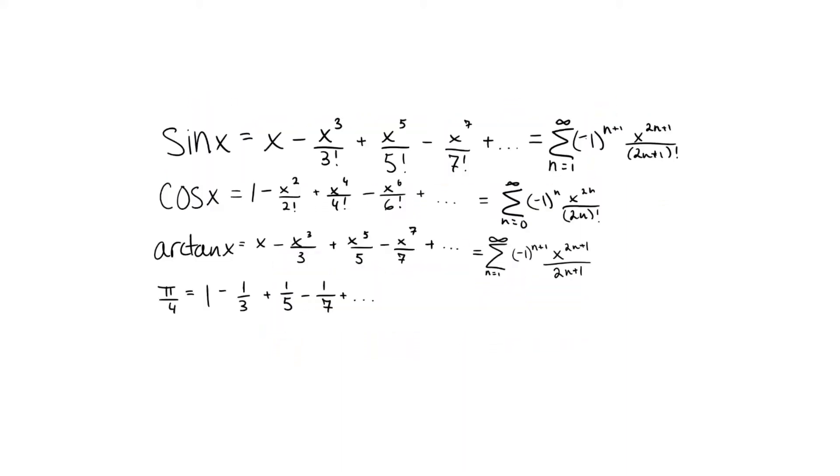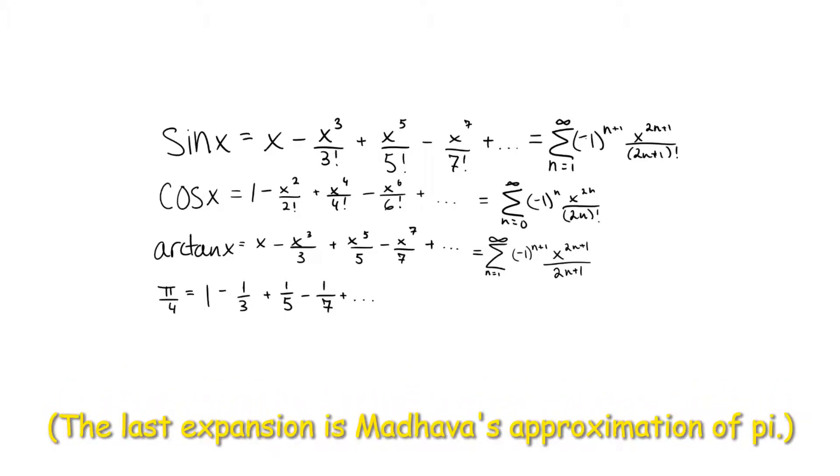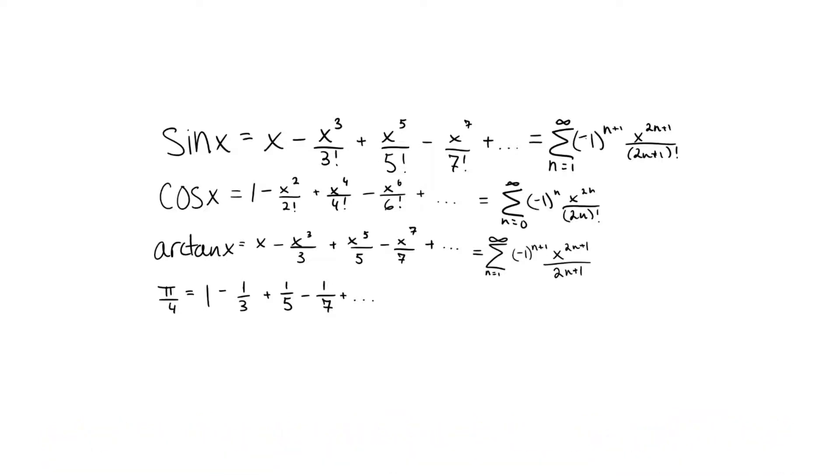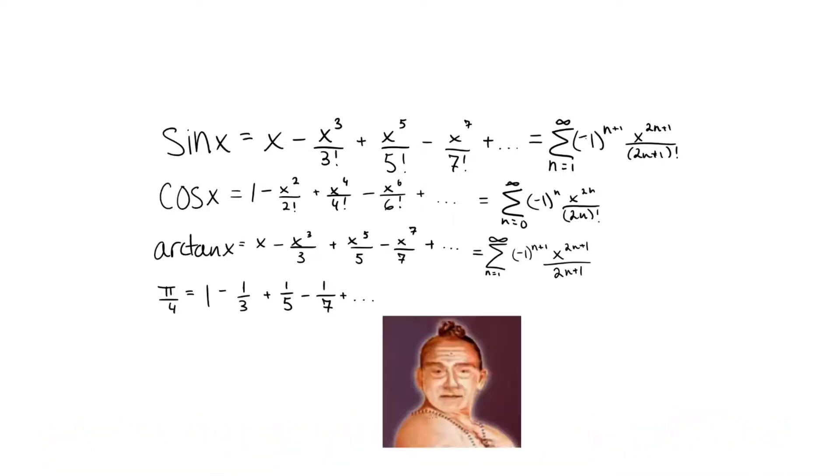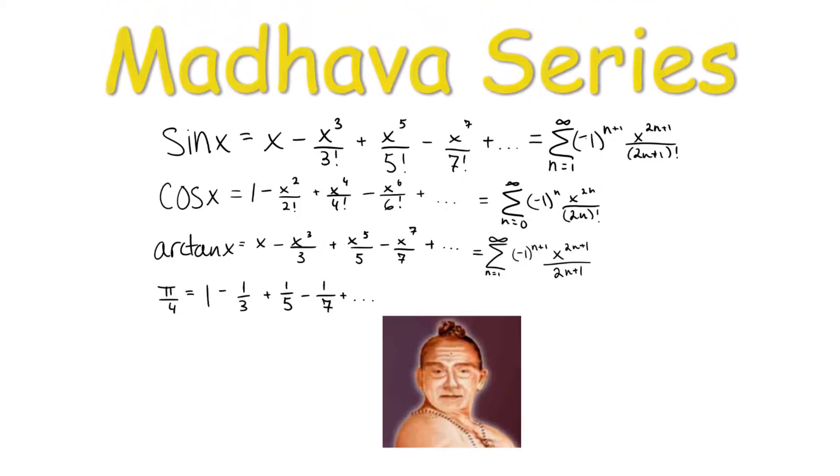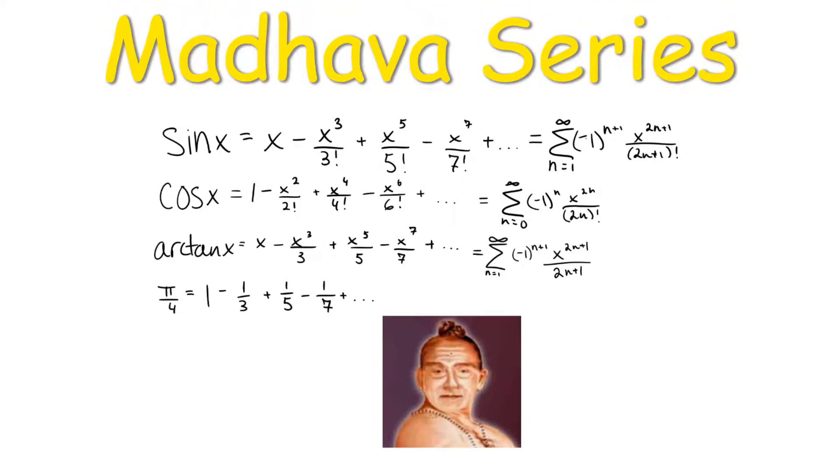Speaking of series, you may recognize these as power series expansions, which are polynomial approximations of functions that don't normally contain polynomials such as sine, cosine, arctangent, e to the x, etc. However, these first three expressions are actually Madhava series. Madhava was an Indian mathematician and astronomer who lived during the 14th and 15th centuries, years and years before Newton and Leibniz would find the same approximations.